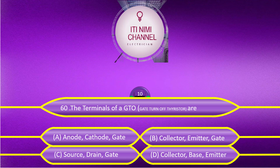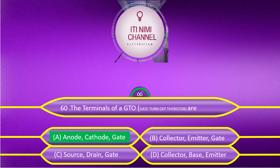Option D, collector, base, emitter. The answer is Option A: anode, cathode, gate.